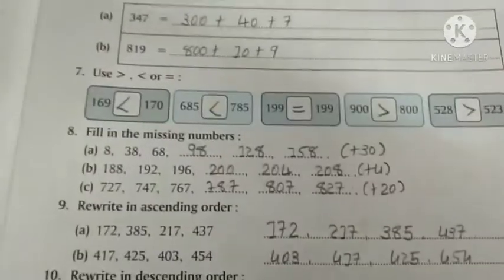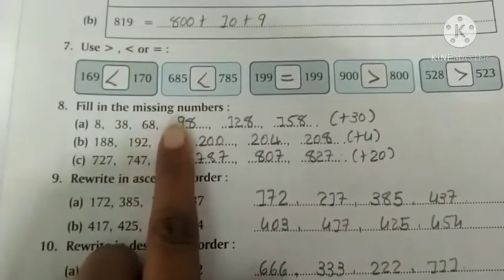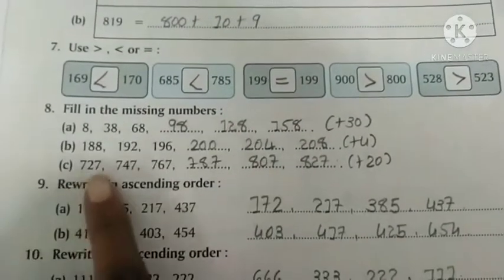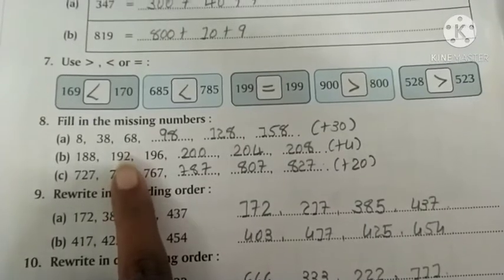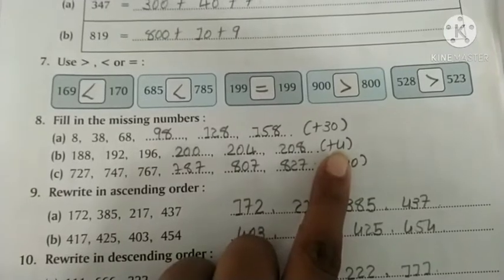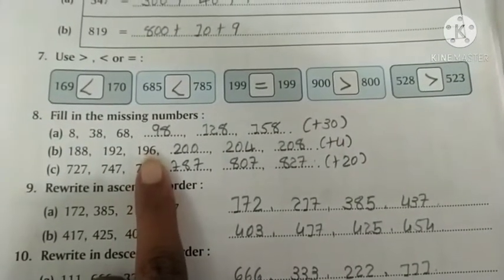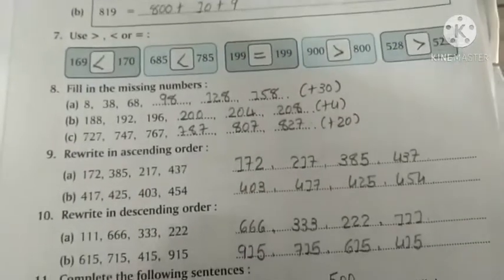Question 8, fill in the missing numbers. For 38 and blank, subtract 38 minus 8 to get 30, so you need to add 30 to find the answer. Next, 188 and 192, subtract to find the difference is 4, so add 4 to get 196.